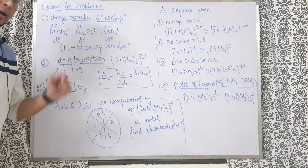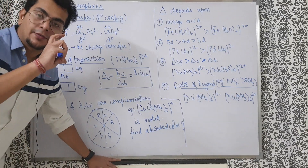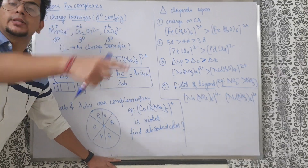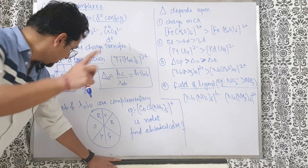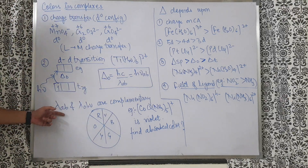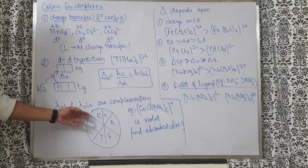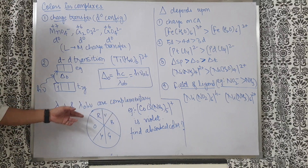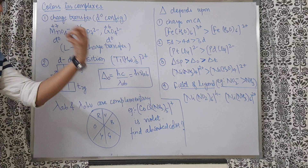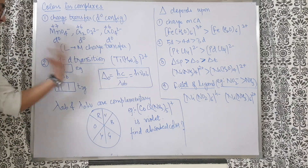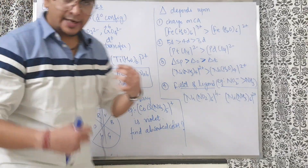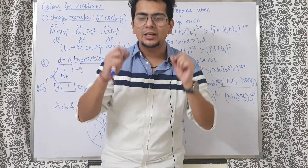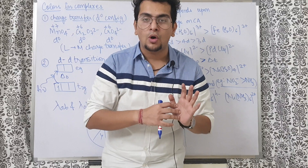Δo = hc/λ(absorbed). If a complex absorbs a specific color, the color it actually shows (observed color) is the complementary or opposite color. So the observed wavelength corresponds to the complementary color of the absorbed wavelength. For example, if a shirt appears blue, it means red color has been absorbed.